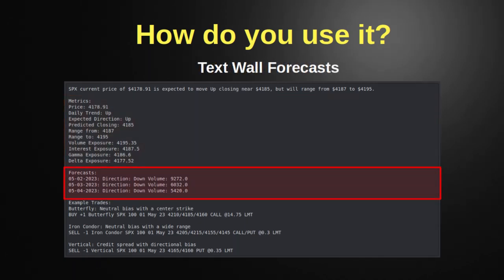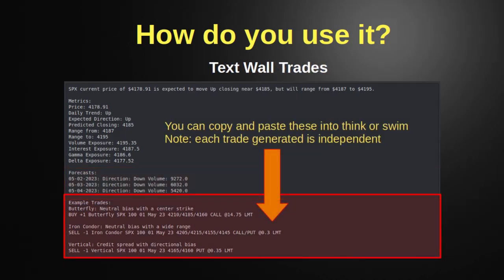The next part of the text wall is a forecast — a lot like a weather forecast, going a few days out. This is specifically volume-based; we're not running the complete algorithm on every single day — that's something I want to do in version 2. Right now it gives you a basic expected direction and the reason why, which is useful if you have a position that's not going well and want to roll it. The final part of the text wall are the trades — you can literally copy and paste these into thinkorswim. You don't have to memorize the strikes or jump between screens; I'll demonstrate this in the live example.